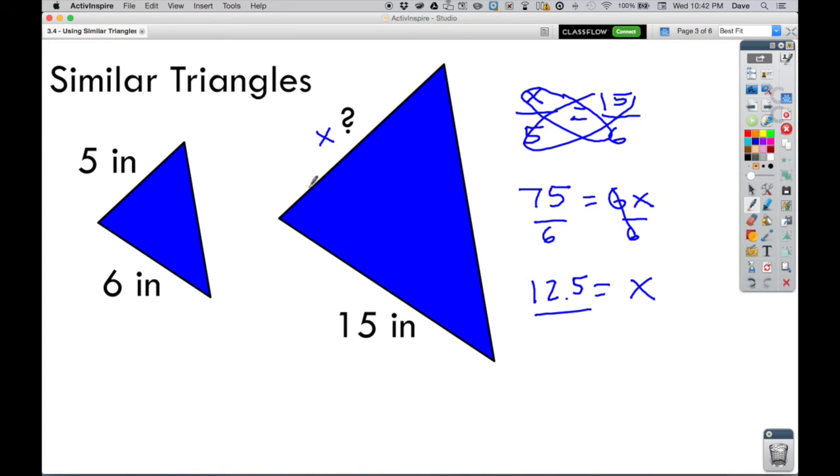That's how we found this measurement. We didn't take a direct measurement by measuring it. We went about it indirectly by using the measurements from the other similar triangle and used proportions to find that number of inches.